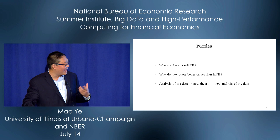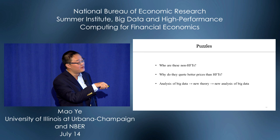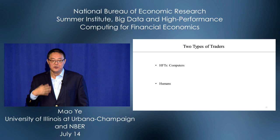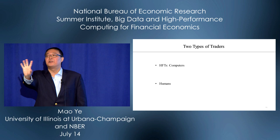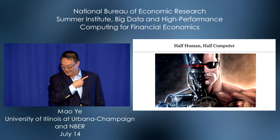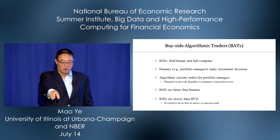We start with analysis of big data, then develop new theory, then do new analysis of big data. The model is complex, but here's the key insight: many researchers think in binary terms — either you're a computer or you're a human. But we realize there's a third type: half-human, half-computer. These are buy-side algorithmic traders (BATs). They are really, really important.